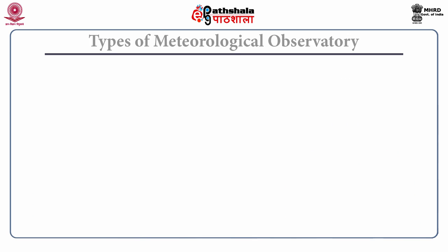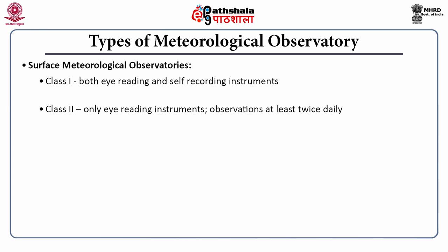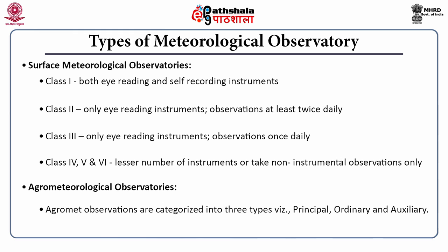Let us start with the types of meteorological observatory. One is called surface meteorological observatory, which has 6 classes. Class 1 has both eye reading and self-recording instruments. In class 2, only eye reading instruments are there and observations are taken at least twice daily. In class 3, only eye reading instruments are there and observations are taken once daily. In case of classes 4, 5 and 6, lesser number of instruments are there or in some cases non-instrumental observations are taken only. Agrometeorological observatories are classified into three types: principal, ordinary, and auxiliary.